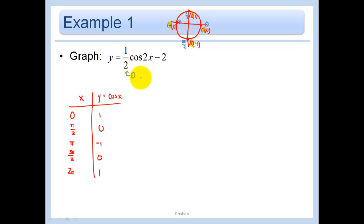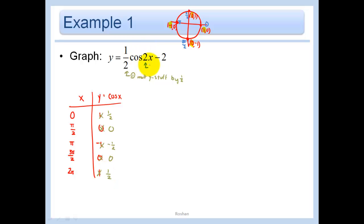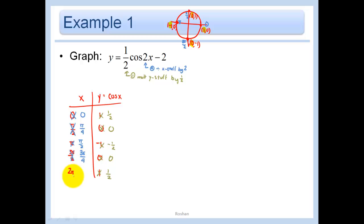The first thing I'm going to do is multiply all the y stuff by 1/2. The next thing I'm going to do — remember that everything applied to the x stuff we undo — so I'm going to divide the x stuff by 2, because to undo 2 times, I divide by 2. You see that our period is only half as much now; it goes from 0 to π.